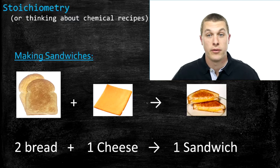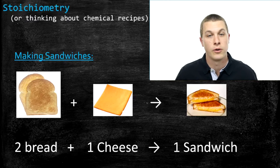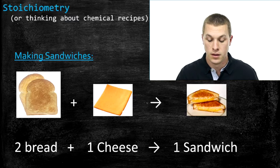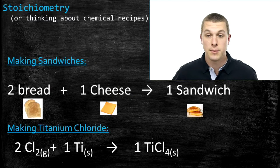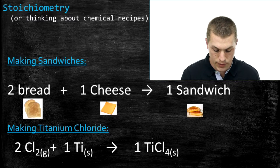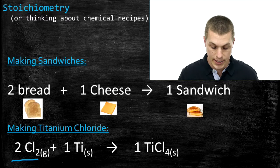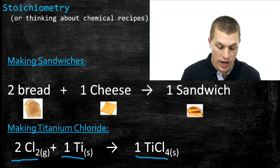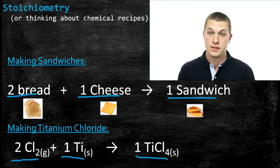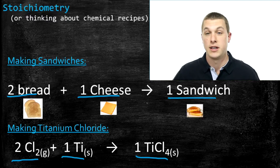We're going to use thinking about the ingredients that go into something to calculate how much product could come out. For example, if I put in four slices of bread, how many sandwiches come out? Since there are two slices of bread needed for each sandwich, we could make two sandwiches. Here's a chemical reaction combining chlorine and titanium to make titanium chloride — it has the exact same stoichiometry: two chlorines plus one titanium gives one titanium chloride, just like two slices of bread plus one slice of cheese gives one sandwich.